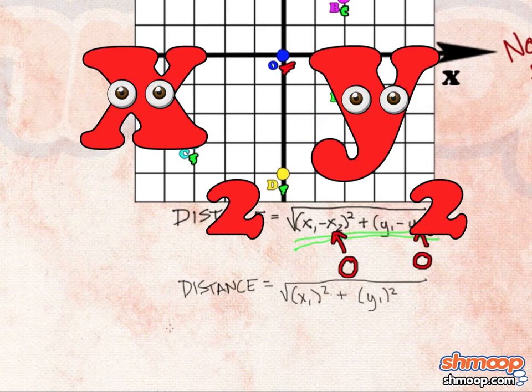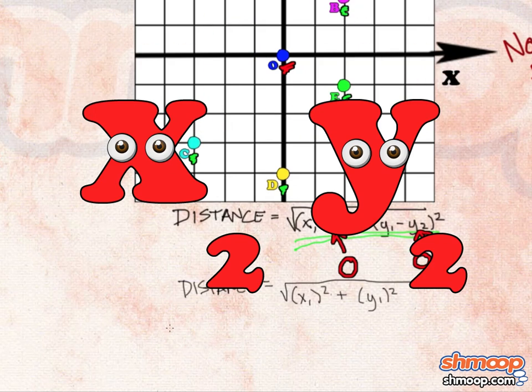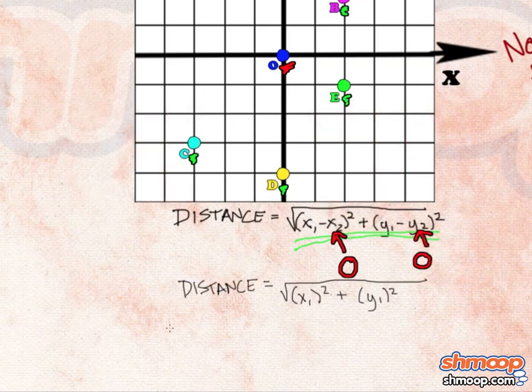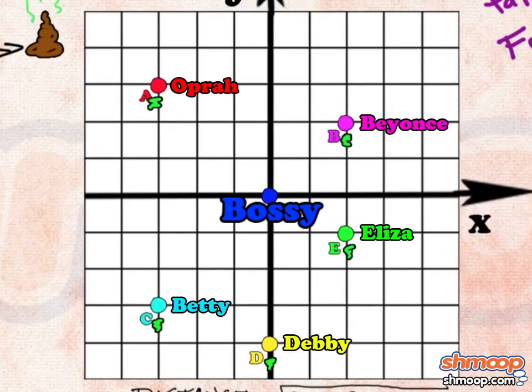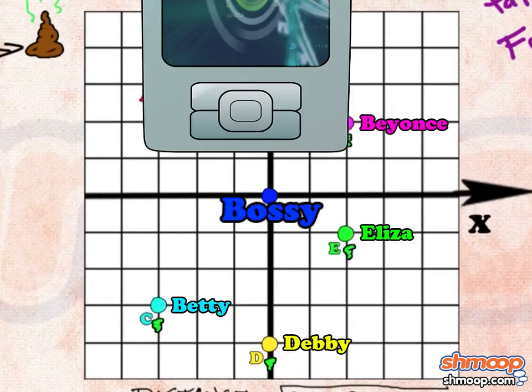Basically, it's like x2y2 doesn't even exist. Then it's just a matter of plugging in each cow's coordinates, which would be easier if each of them was equipped with a GPS unit.